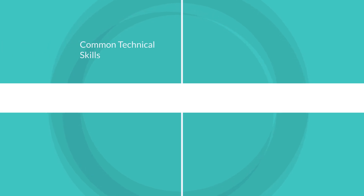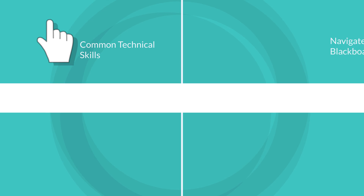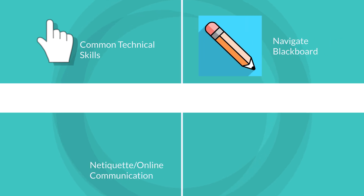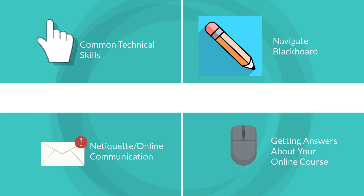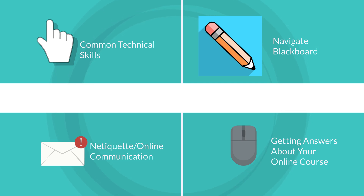This program will cover topics that have been shown to positively impact student success in online courses. They include common technical skills, using Blackboard, communicating online, and getting answers about your online course. These subjects cover five modules and the course will provide you with a lot of important information to help you succeed in your online learning.